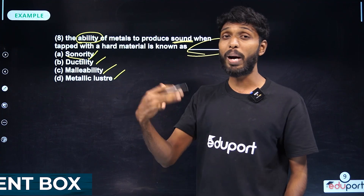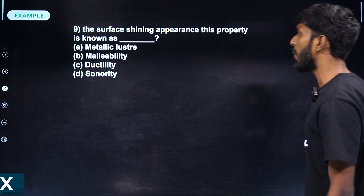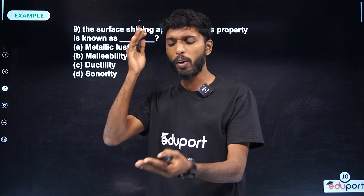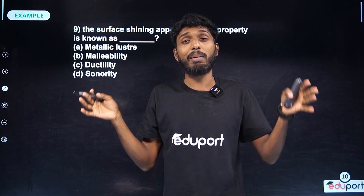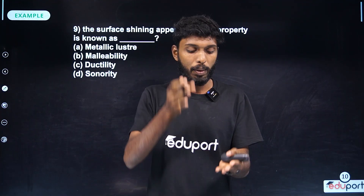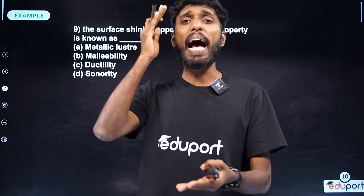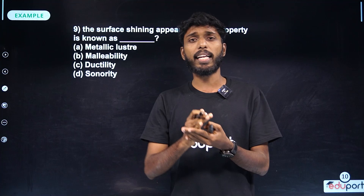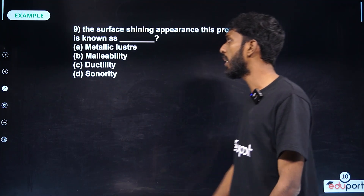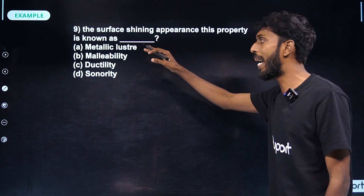Then the surface shining appearance — this property is known as metallic luster. For example, we have a shining surface. That name is Metallic Luster: malleability, ductility, sonority, metallic luster.